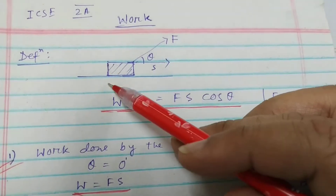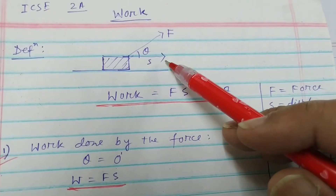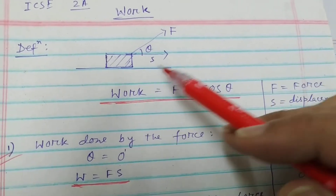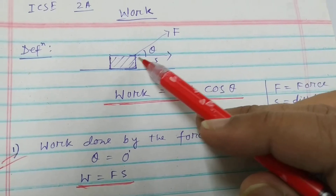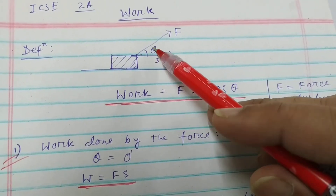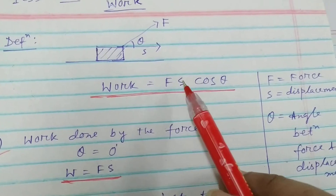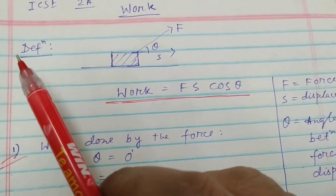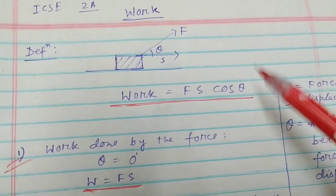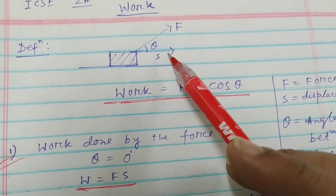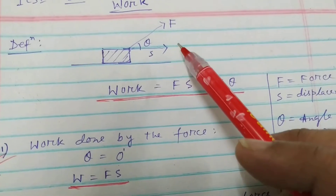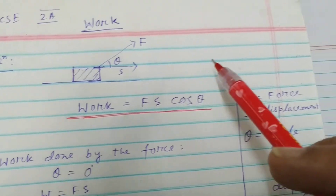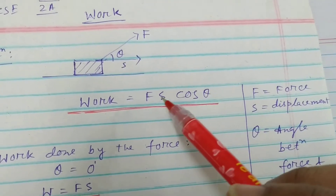What is work? When we apply force on a body and that force causes some displacement s, and the angle between them is theta — see the diagram. This is the force, this is the displacement, and this is the angle theta between them. Then work is equal to F times s times cos theta. A force is applied on a body causing a displacement s, and then it is said that the force has done some work, and the work is measured by the product of force and displacement.